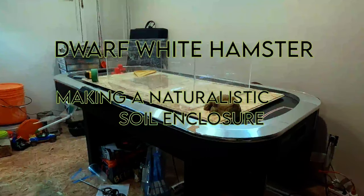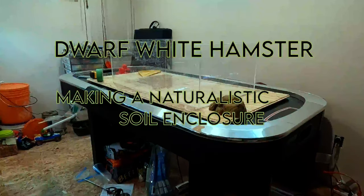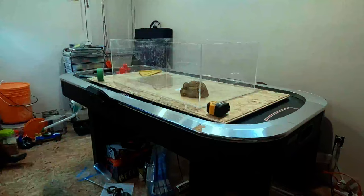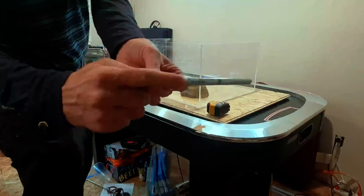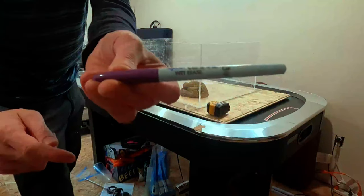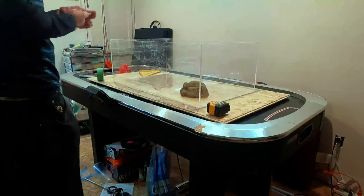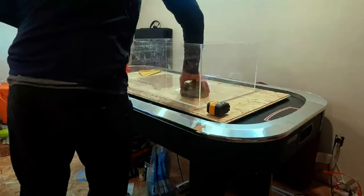Today I'm building a naturalistic soil hamster cage. The dimensions fit on top of a cage top that I currently have, approximately 30 inches by 18 inches or something along those lines.